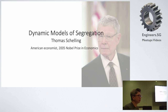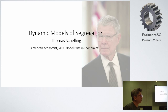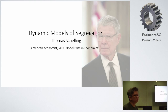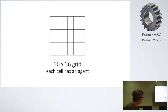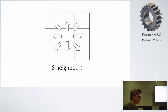There is a guy called Thomas Schelling, a Nobel Prize winner in economics. One of his most popular papers is 'Dynamic Models of Segregation', which talks about how people are segregated racially. His model is different from what I'm showing today. What I did was read his paper and reinterpret it in a slightly different way. The model I used is a 36 by 36 grid, each cell with an agent, and each agent has eight neighbors.